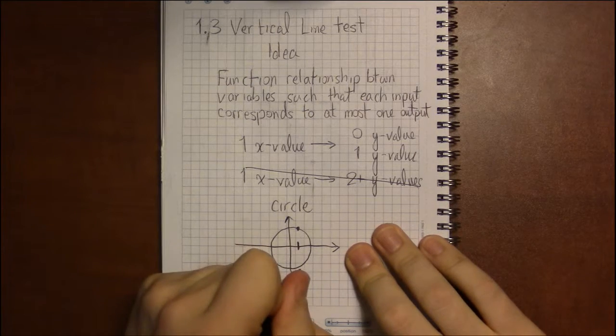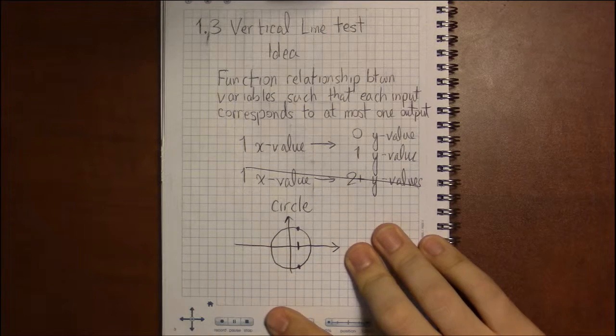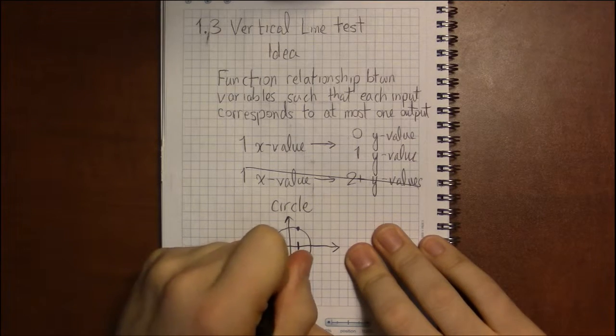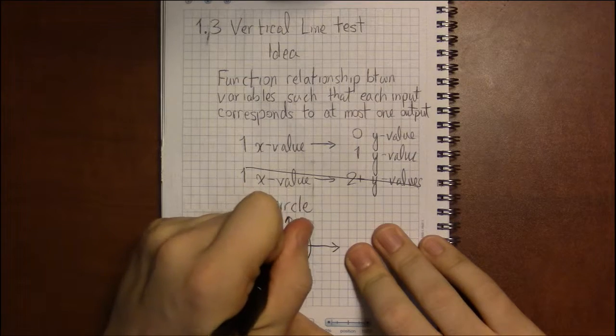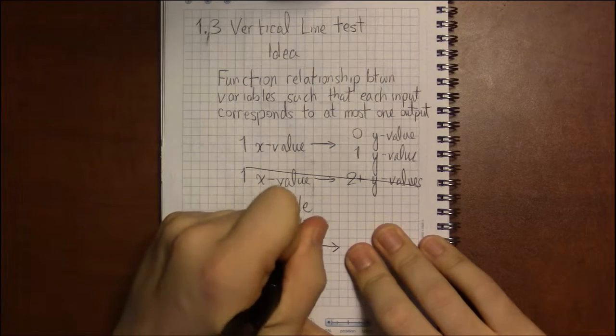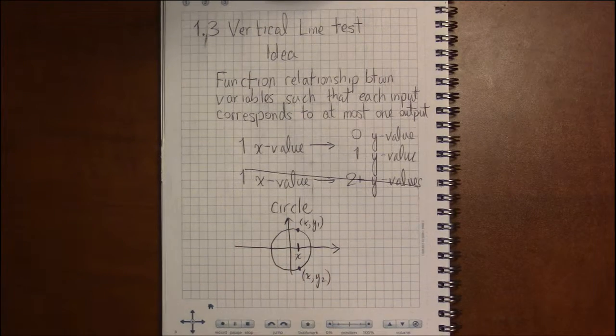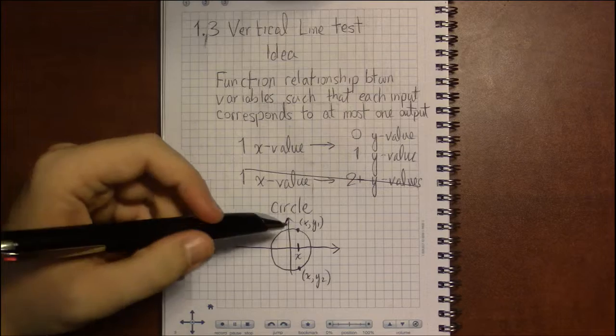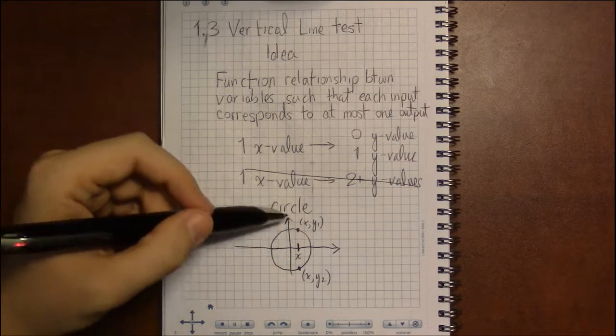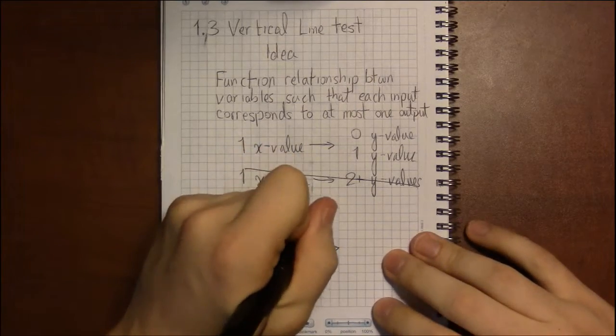And there's a y value here. That this one particular x value has two y values associated to it. So this means that a circle cannot be a function.